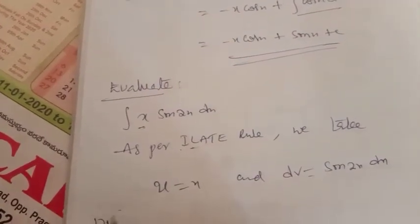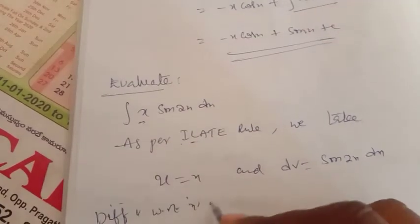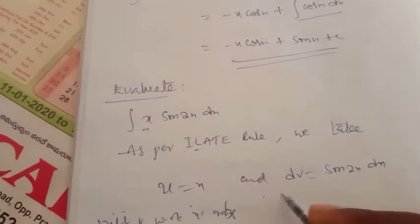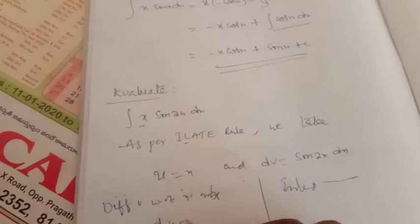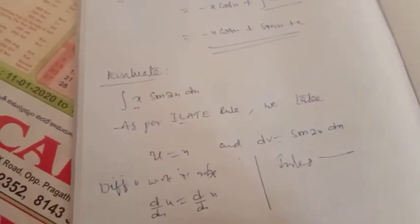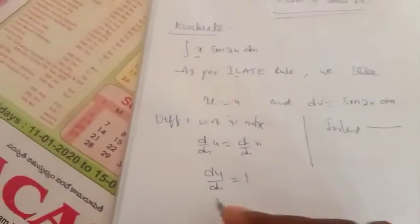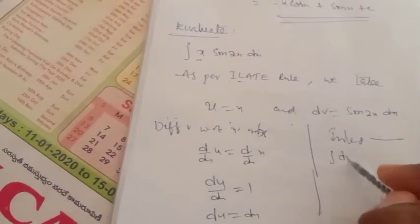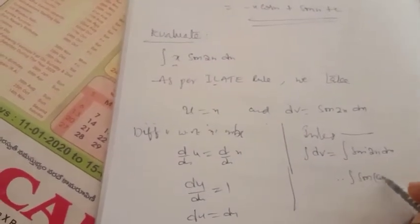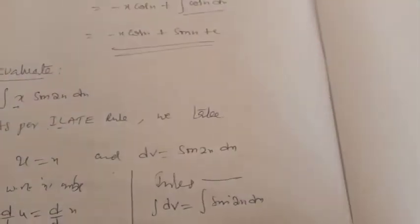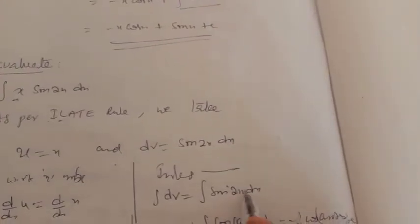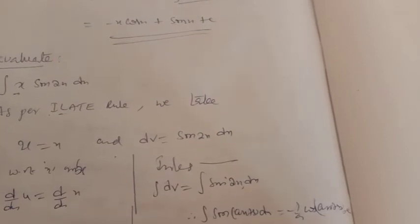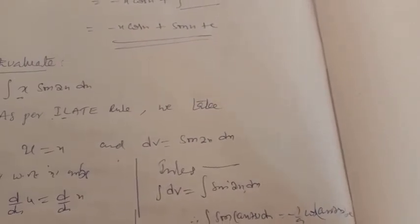For the first function, differentiate: du by dx equals 1, so du equals dx. For the second function, integrate: integral dv equals integral sin(ax + b) dx, which equals minus 1 by a into cos(ax + b) plus c. Here, for sin 2x, this gives v equals minus 1 by 2 into cos 2x plus c.